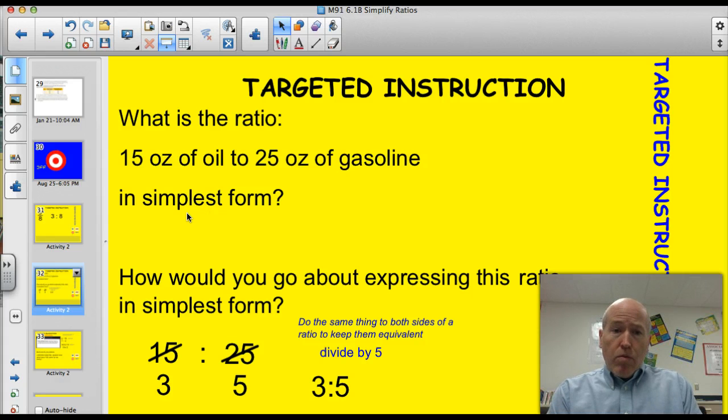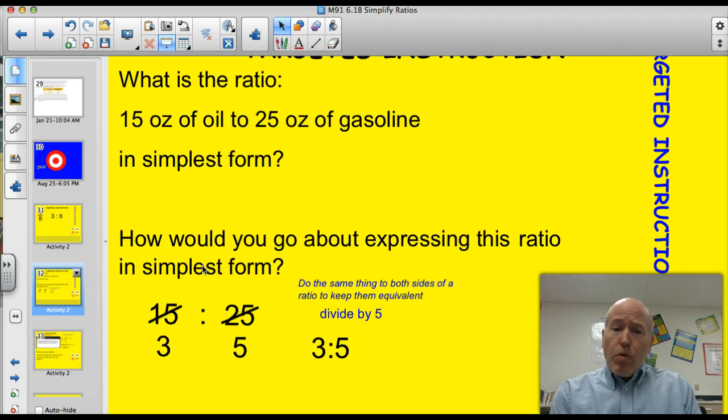Here's the question tonight. What is the ratio, 15 ounces of oil to 25 ounces of gasoline, in simplest form? How would you go about expressing that ratio in simplest form? Well, when you have a fraction, whatever you do to one, the top side of the fraction, you do to the bottom side. And really, it's the same thing here with a ratio. Whatever you do to one side, you'll do to the other. So I've got my little note there. Do the same thing to both sides. And this will help keep them equivalent.